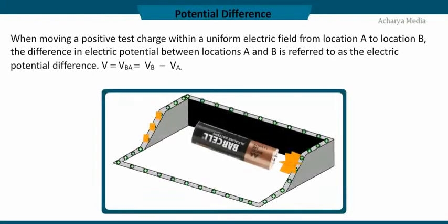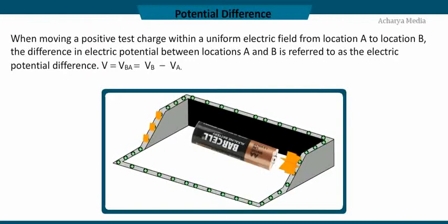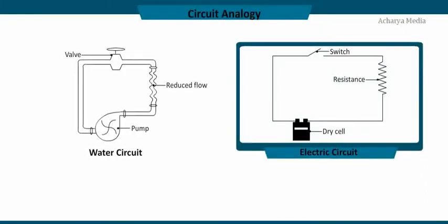When moving a positive test charge within a uniform electric field from location A to location B, the difference in electric potential between locations A and B is referred to as the electric potential difference. It is represented as V is equal to VBA which is equal to VB minus VA. Same as how an electric motor pumps the water to a tank at a higher altitude, a battery supplies potential to the charges pushing it to a higher potential. Like the pipes, the conductors allow the flow of charges.